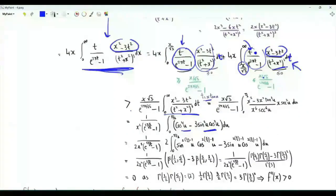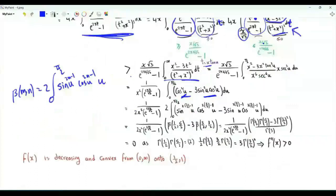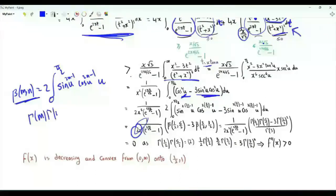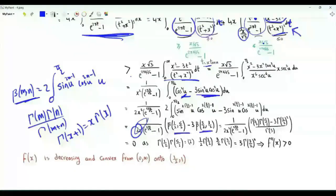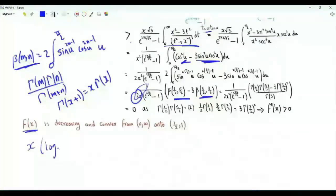Using the same substitution t = x·tan(u) and applying the beta function — where beta(m,n) equals 2·integral from 0 to π/2 of sin^{2m-1}(u)·cos^{2n-1}(u) du — one integral gives (1/2)·beta(1/2, 5/2) and the other gives (3/2)·beta(3/2, 3/2). Using beta(m,n) = Γ(m)Γ(n)/Γ(m+n) and Γ(x+1) = x·Γ(x), the difference is exactly 0. Therefore the lower bound on the second derivative is 0, meaning f''(x) ≥ 0, confirming that f(x) = x·log(x) - digamma(x) is a convex function.